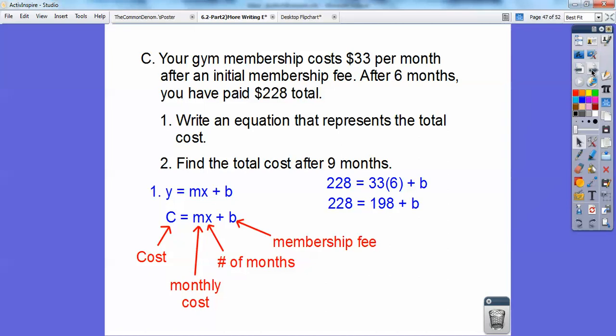I'm going to plug them in, and then subtract $228, and you get b equals 30. So I know that my cost formula is c equals 33x plus 30. That initial fee is $30.